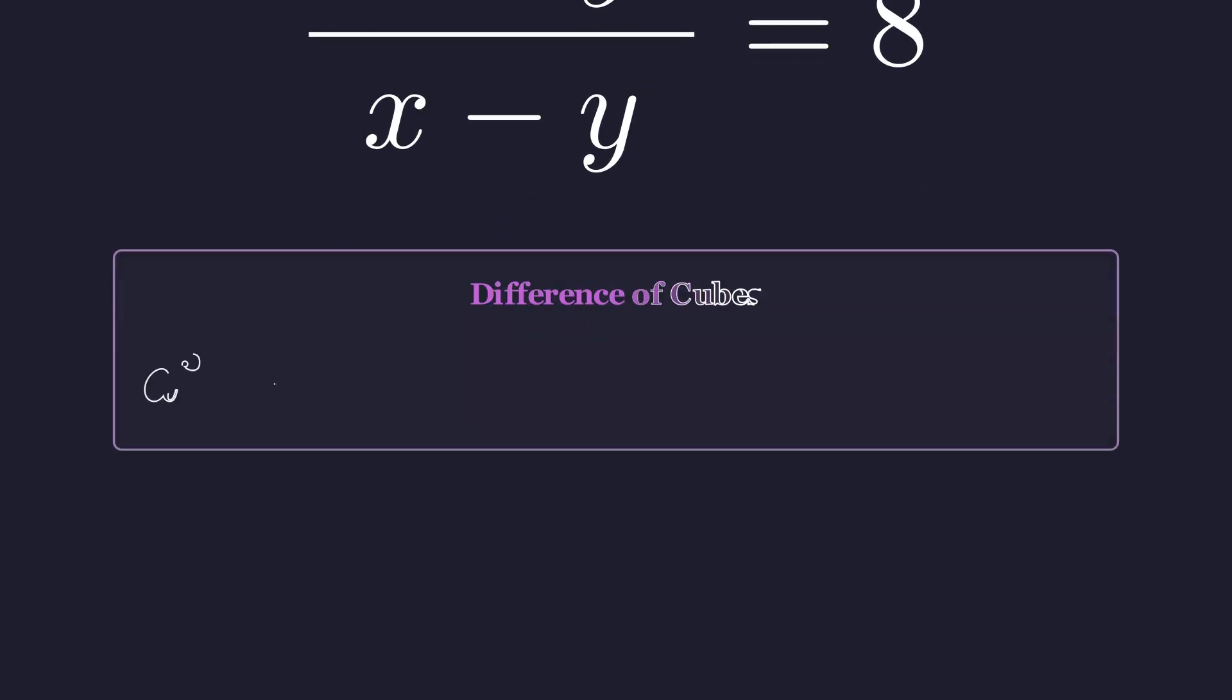The numerator is a difference of cubes. There's a standard factorization for this. a cubed minus b cubed factors as a minus b times a squared plus ab plus b squared. Applying this to x cubed minus y cubed,